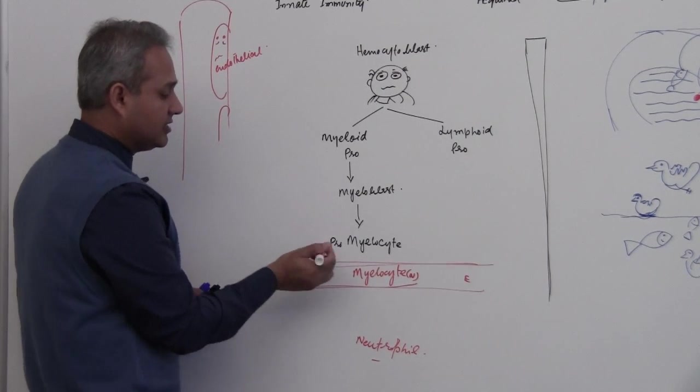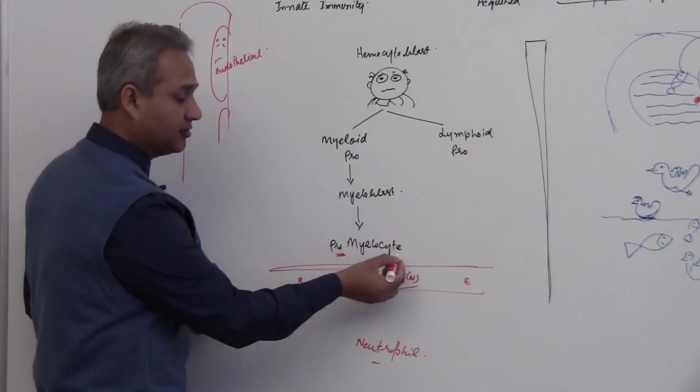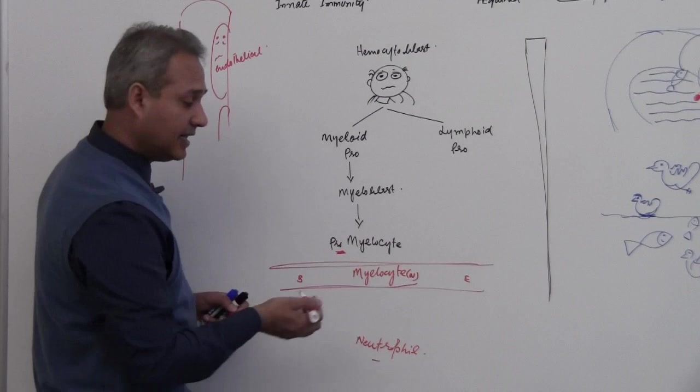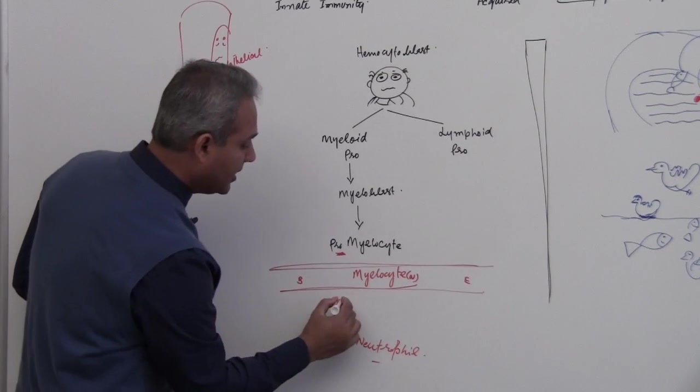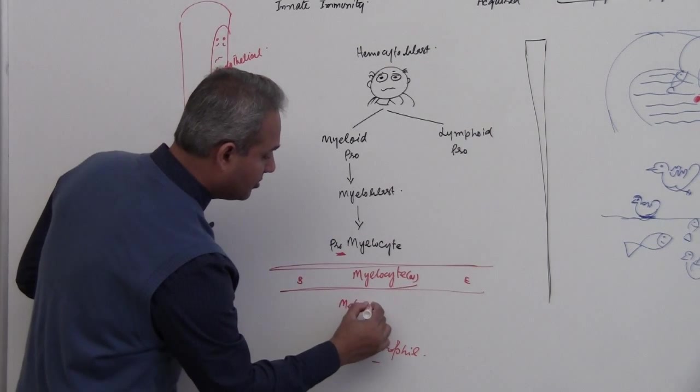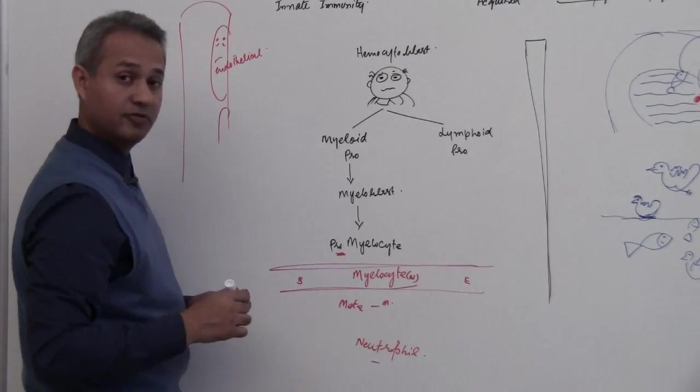Any cell which is before that is called promyelocyte, and any cell which comes after this is called meta, meta means after, myelocyte.